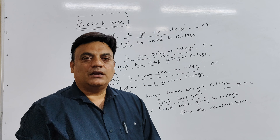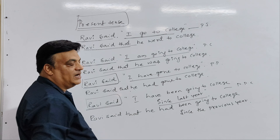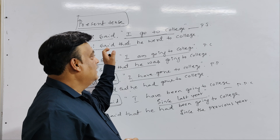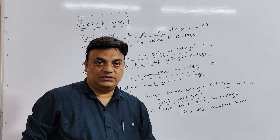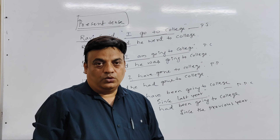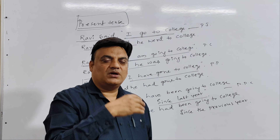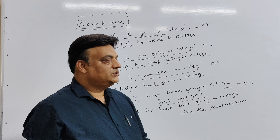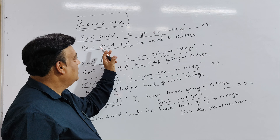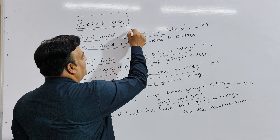First example: Ravi said, 'I go to college.' This changes to: Ravi said that he went to college. He said he went to college — because it is third person, we change 'I' to 'he'.